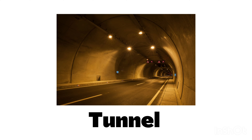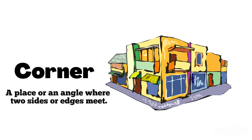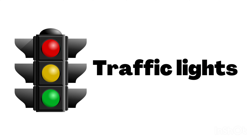The next one is tunnel. Of course, you know the next word — it is bridge. The next word is very useful: it is corner, a place where two different sides meet. Then we have traffic lights.